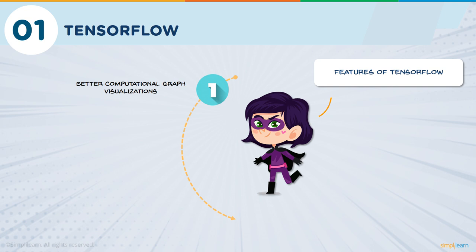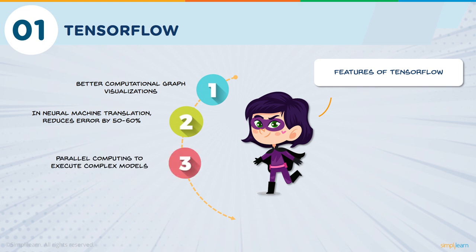Let's talk about the features of TensorFlow. TensorFlow is majorly used in deep learning models and neural networks, where we have other libraries like Torch and Theano also. But TensorFlow has hands-down better computational graphical visualizations compared to them. TensorFlow also reduces error largely by 50 to 60% in neural machine translations. It's highly parallel — it can train multiple neural networks and multiple GPUs for highly efficient and scalable models. This parallel computing feature is also called pipelining.